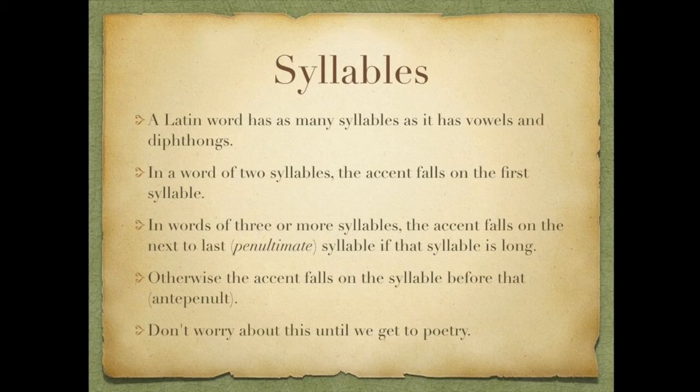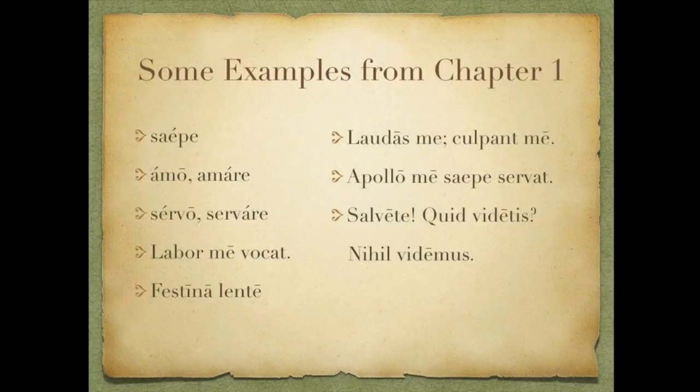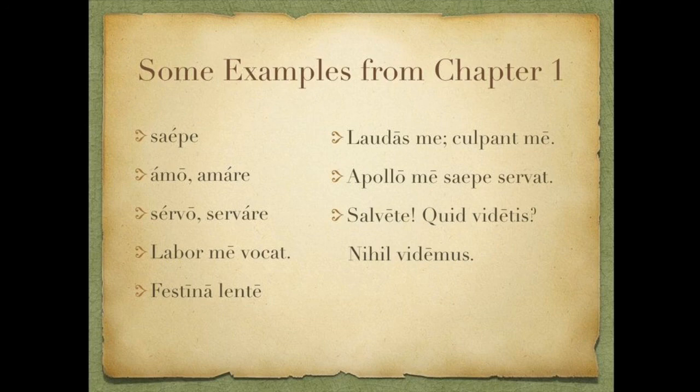Don't worry about it too much — until we get to poetry, it really doesn't matter. We'll do the best we can on pronunciation, but we won't really be counted off for any of it. Some pronunciation examples from Chapter 1: saipe, amo, amare, servo, servare. And some sentences: labor me vocat, festina lente, laudas me, culpant me, appella me saipe, servat.